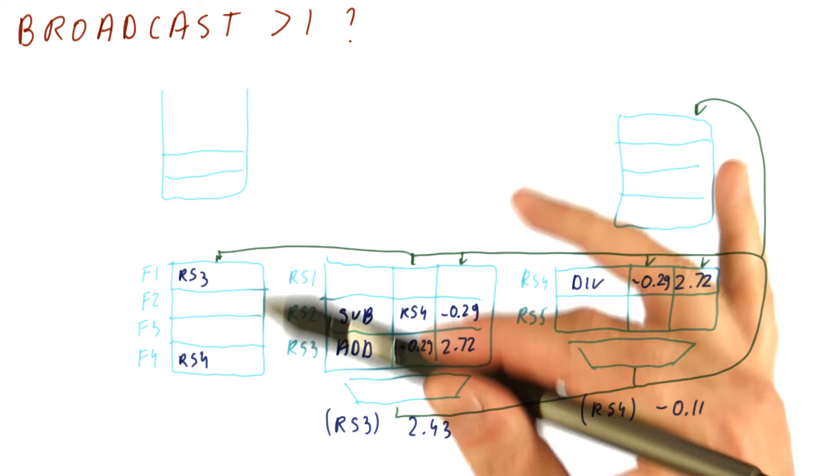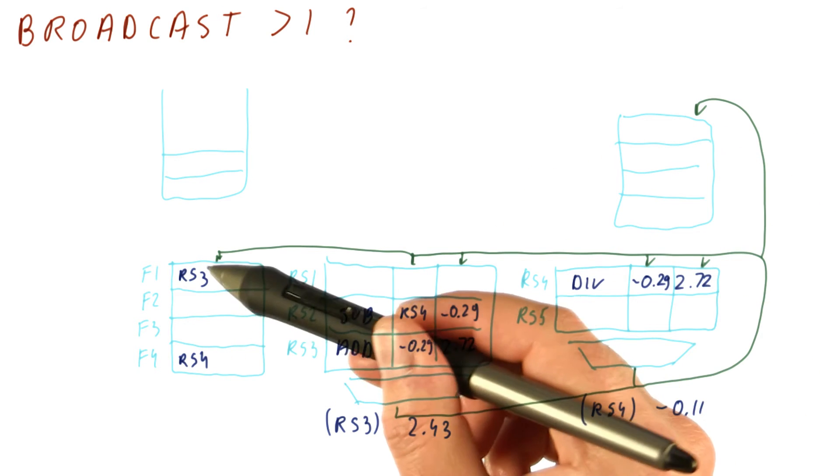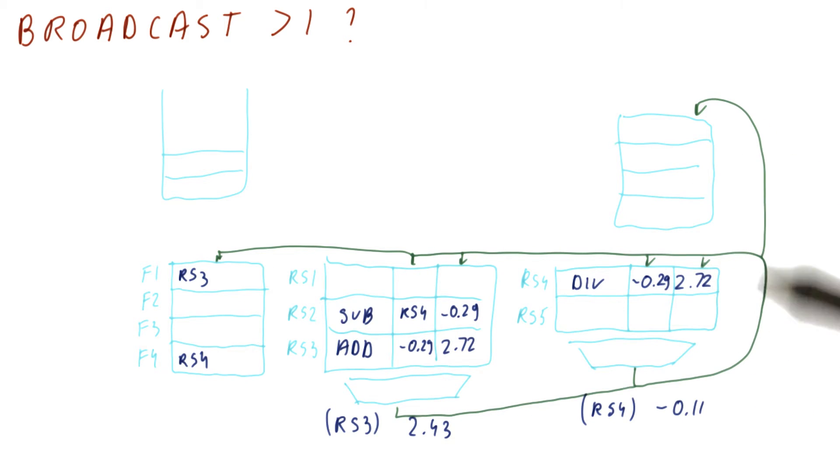So there would be twice as much matching hardware if we had two buses. Similarly here and here you would have to be able to write two results and so on. So if we have only one bus, then the question is which one do we broadcast?